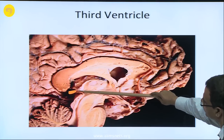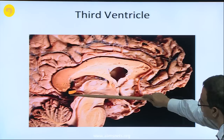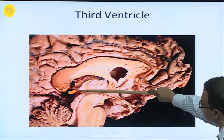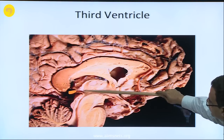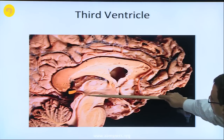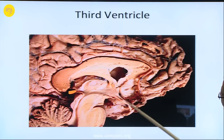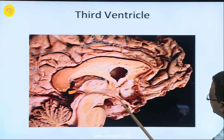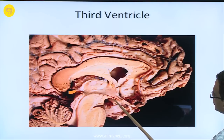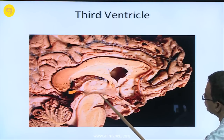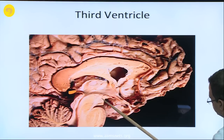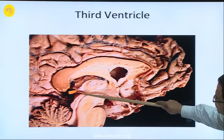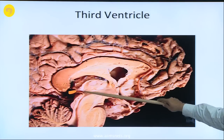The posterior wall of the third ventricle is formed by the pineal gland, which is mostly damaged but I have reconstructed it. These are the two stalks of the pineal gland — superior and inferior. The floor of the third ventricle is formed from anterior to posterior by the optic chiasma, then the median eminence, and also by the midbrain and cerebral aqueduct posteriorly, at the junction between the posterior wall and the floor.